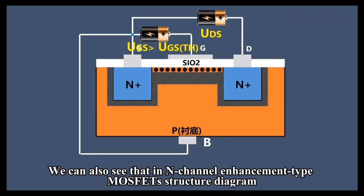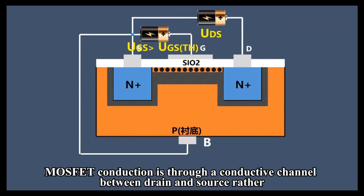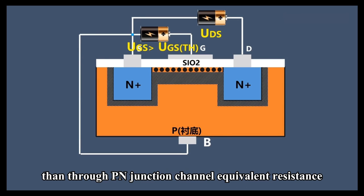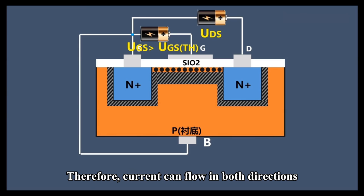We can also see that in the N-channel enhancement type MOSFET structure diagram, MOSFET conduction is through a conductive channel between drain and source rather than through a P-N junction channel. Therefore, current can flow in both directions.